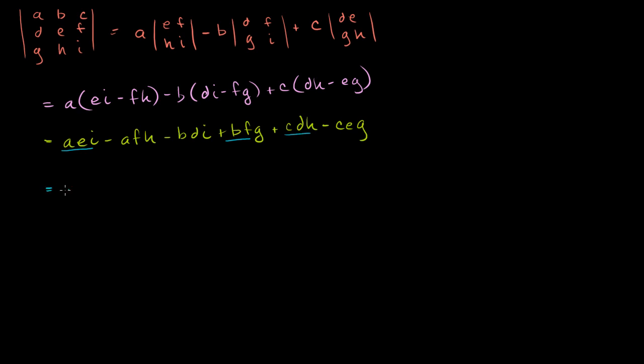So we have this being equal to AEI plus BFG plus CDH. Those are our positive terms. And then our negative terms are here: minus AFH minus BDI minus CEG.